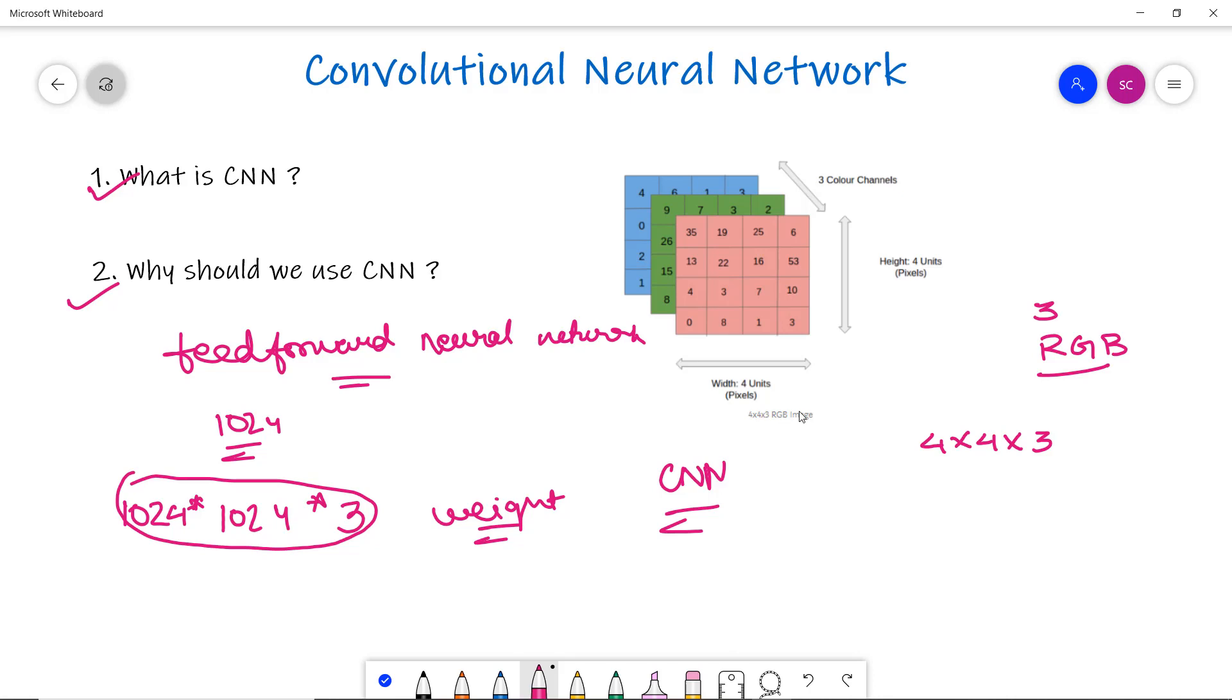We can take another example: the MNIST dataset, which we operated in our previous video. Each image of a clothing piece is of dimension 28×28×1—one because it has only one channel as they are black and white images. The total number of neurons in the first input layer will be 28×28, which sums up to 784 neurons, and this can be unmanageable.